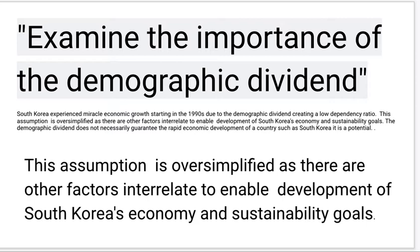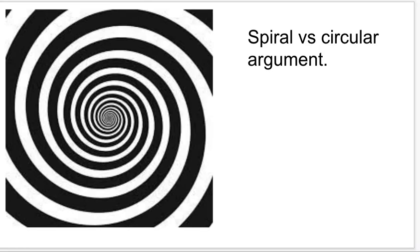The student then went on to say the assumption is oversimplified, as there are other factors that interrelate to enable the development of South Korea's economy and its sustainable development goals. The student has set up this part of the essay in what I'd call a spiral argument. A circular argument is where you just try to prove your statement is correct — and you fall into what we call the black and white fallacy. With a spiral argument, you are kind of agreeing to disagree, taking the knowledge statement and saying yes, this knowledge is true to some extent, but there are other factors that affect that statement.